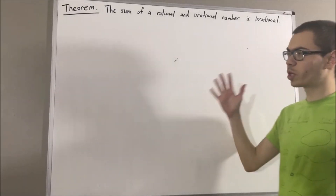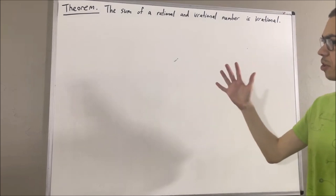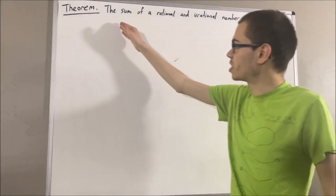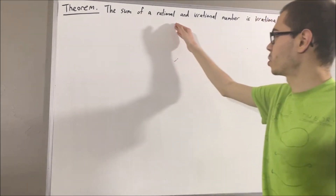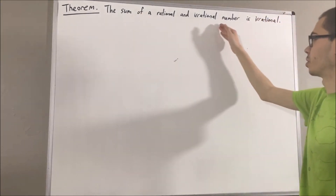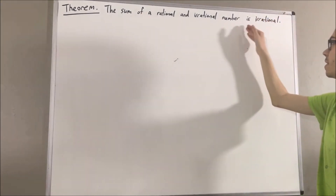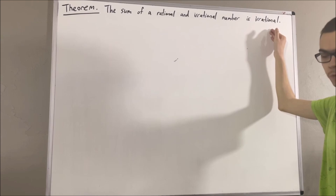In this video, we are going to prove the following theorem: the sum of a rational and irrational number is irrational.